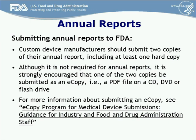When submitting annual reports to FDA, custom device manufacturers should submit two copies including at least one hard copy to the address contained in the guidance document. Please note that the room number for annual report submission has changed and is now room 2622, but the rest of the address is correct. Although not required, it is strongly encouraged that one of the two copies be submitted as an e-copy, for example a PDF file on a CD, DVD, or flash drive. For more information about submitting an e-copy, please refer to the guidance document titled 'E-Copy Program for Medical Device Submissions, Guidance for Industry and Food and Drug Administration Staff,' the link for which is provided in the custom device exemption guidance document.